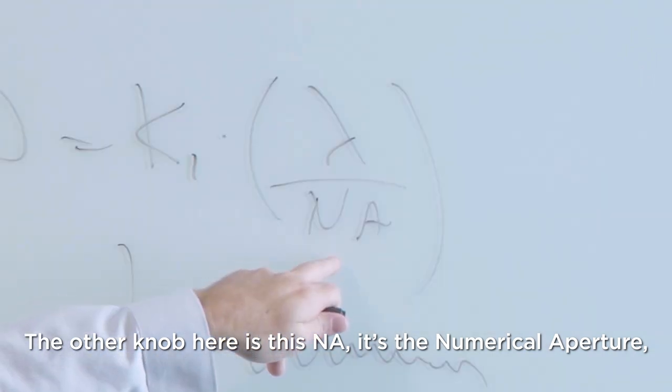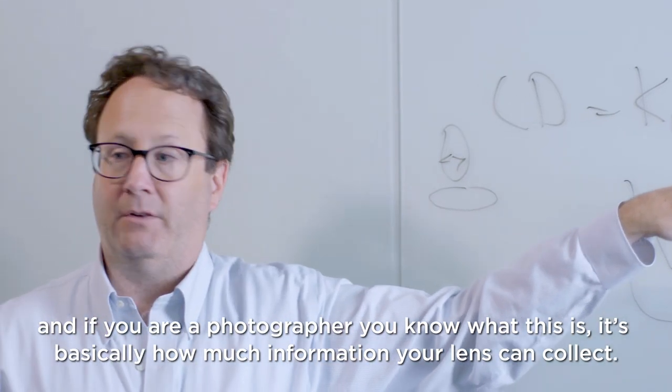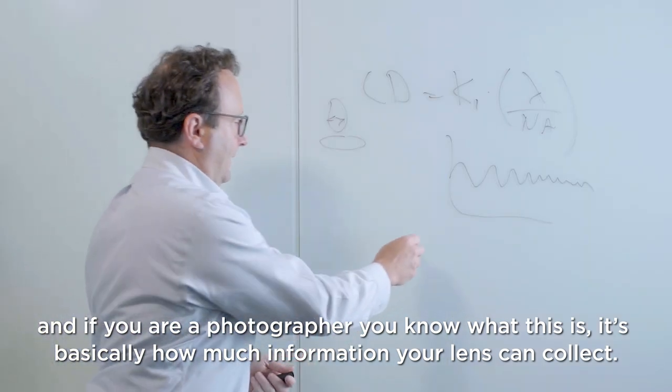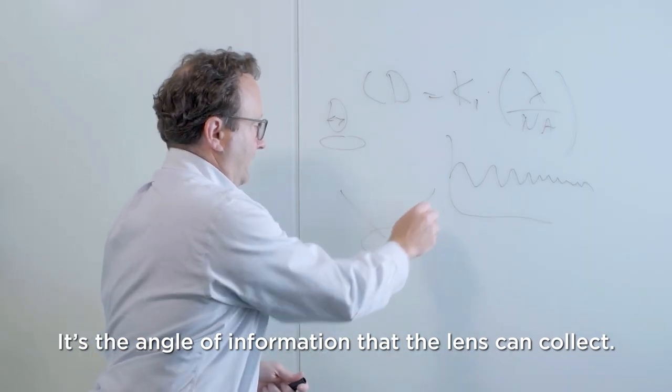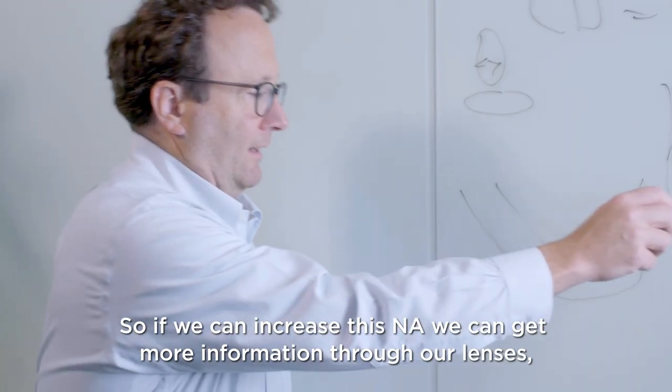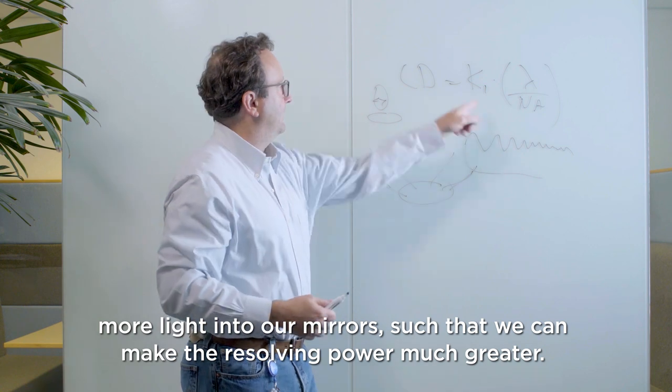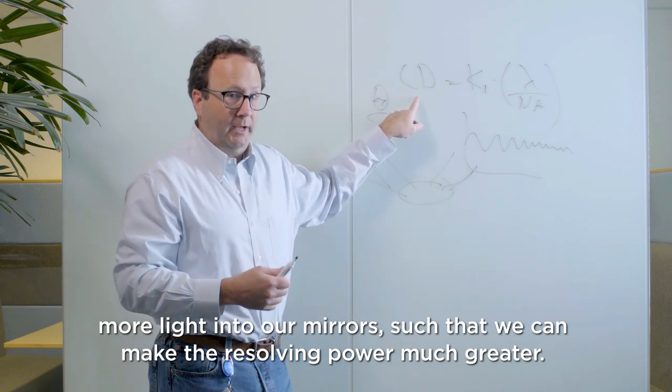The other knob here is this NA - it's numerical aperture, and if you're a photographer you know what this is. It's basically how much information your lens can collect, the angle of information that the lens can collect. So if we can increase this NA we can get more information through our lenses, more light into our mirrors such that we can make the resolving power much greater.